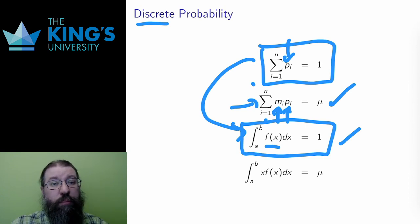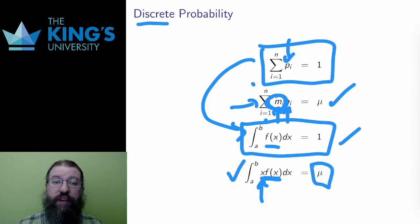Well, then what about means? To calculate the mean in discrete probability, I multiplied by the measurement in the sum. I do the same thing here. The variable x is the measurement, so the mean is the integral over the domain of the probability distribution multiplied by the measurement, multiplied by the variable. The Greek letter mu is the conventional one for mean, so I will use that notation throughout this week.